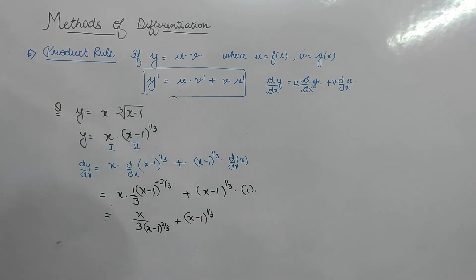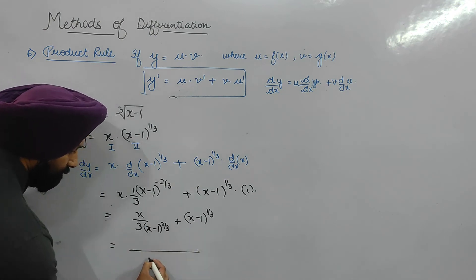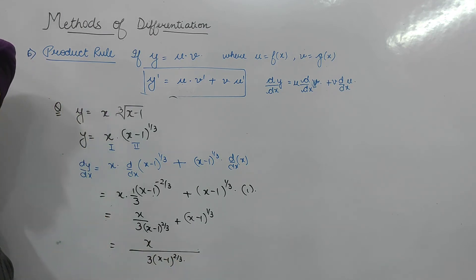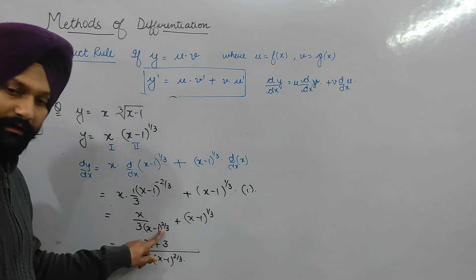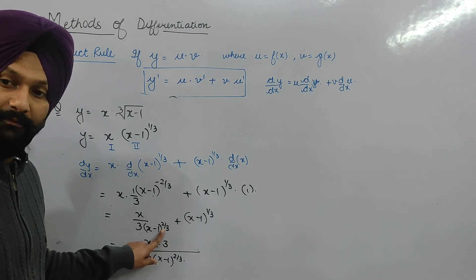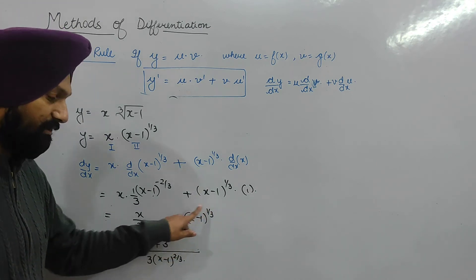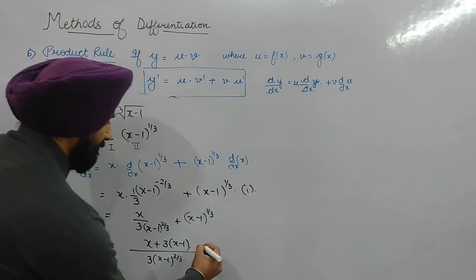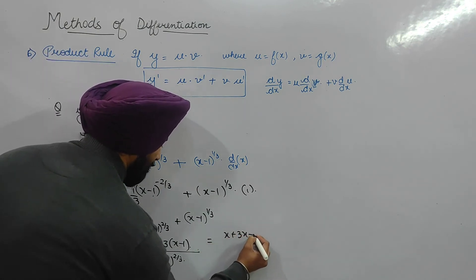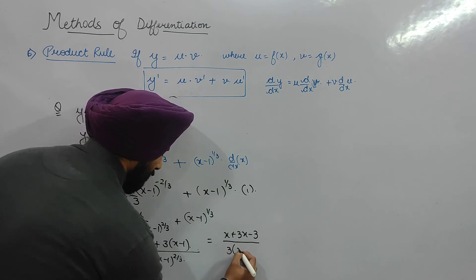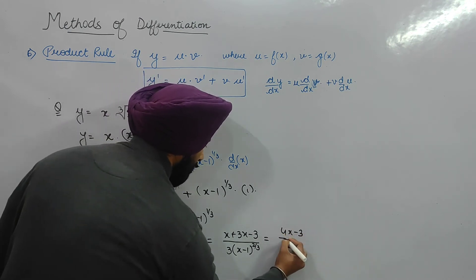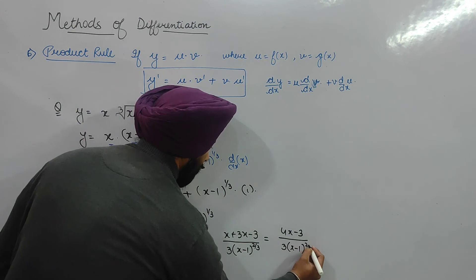To simplify, take LCM with denominator 3(x − 1)^(2/3). Combining: x over 3(x − 1)^(2/3) plus (x − 1)^(3/3) over 3(x − 1)^(2/3). Adding numerators gives (x + 3x − 3) over 3(x − 1)^(2/3), which simplifies to (4x − 3) / [3(x − 1)^(2/3)]. This is an important result.